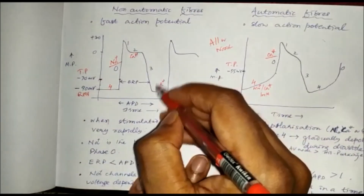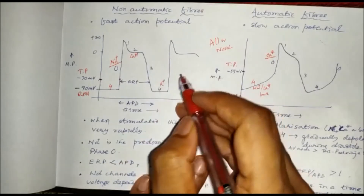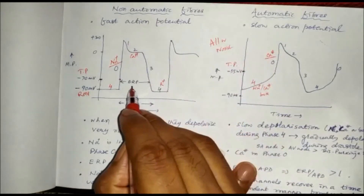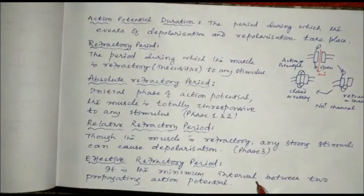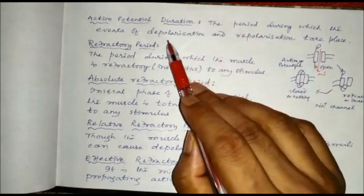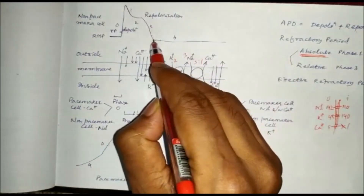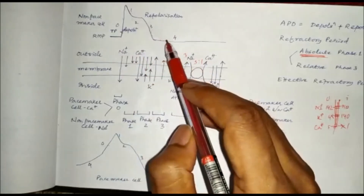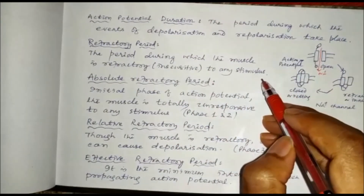During the relative refractory period, if the impulse is strong enough, another action potential can occur, but it will differ from a normal one. The effective refractory period (ERP) is the minimum interval between two propagating action potentials. Action potential duration (APD) is the period during which depolarization and repolarization take place. The refractory period is the period until another impulse can be initiated.